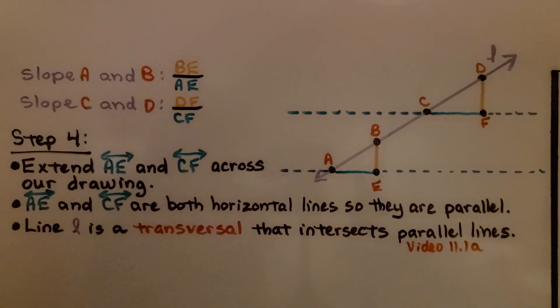We're going to put them all the way across our drawing. Line AE and line CF are both horizontal lines, so they're parallel.